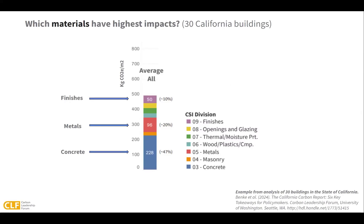Using that same California study of 30 newly constructed buildings, let's take a closer look at which materials contribute to embodied carbon the most. You can see that concrete and steel were the most impactful materials averaged across all buildings. But finishes such as carpet, partitions, and ceilings also contributed significantly. One finding was that finishes can be quite impactful for certain building types, like multifamily buildings. Frequent renovations can lead to interior finishes exceeding the structural embodied carbon impacts over the life of a building.